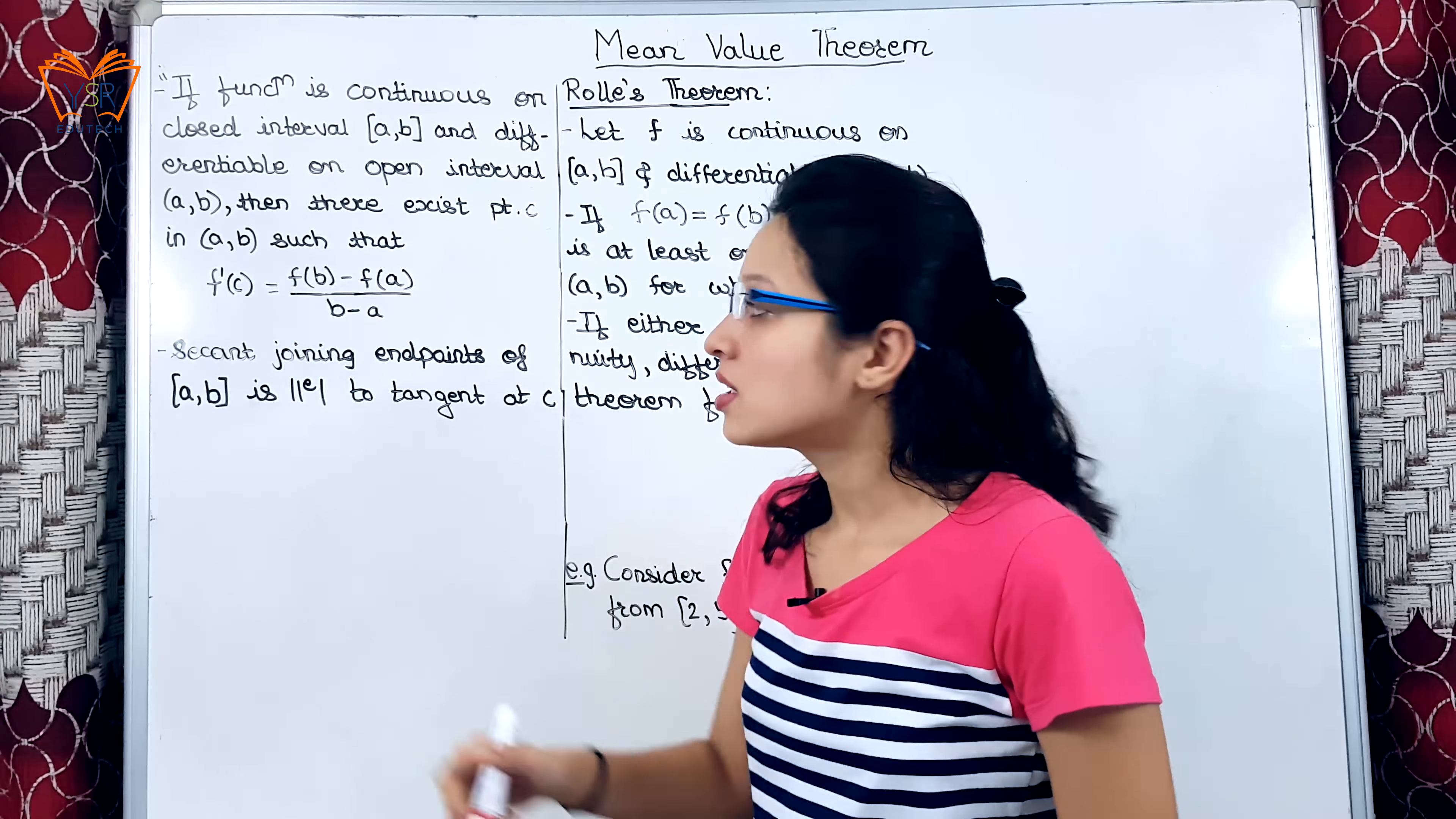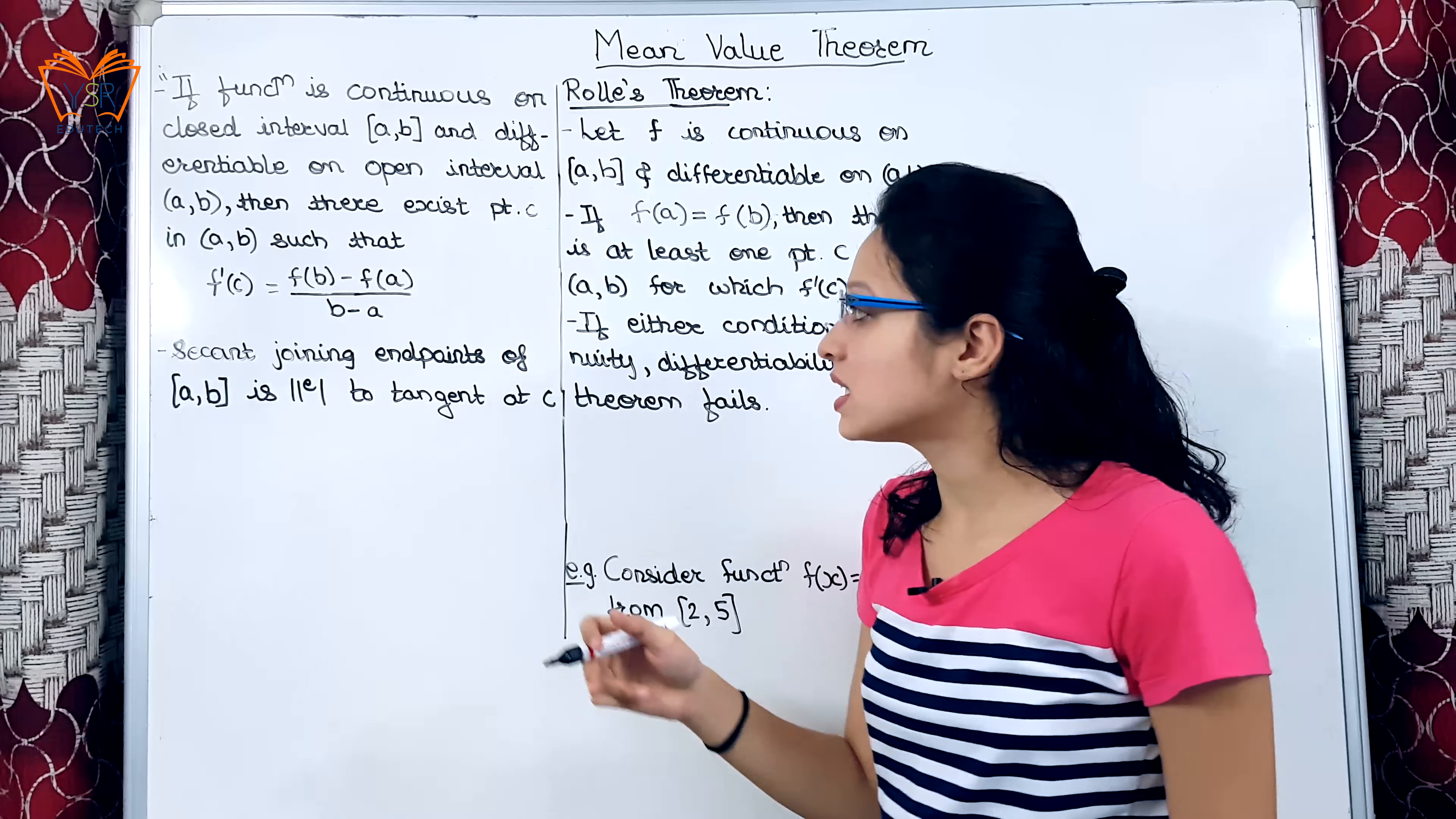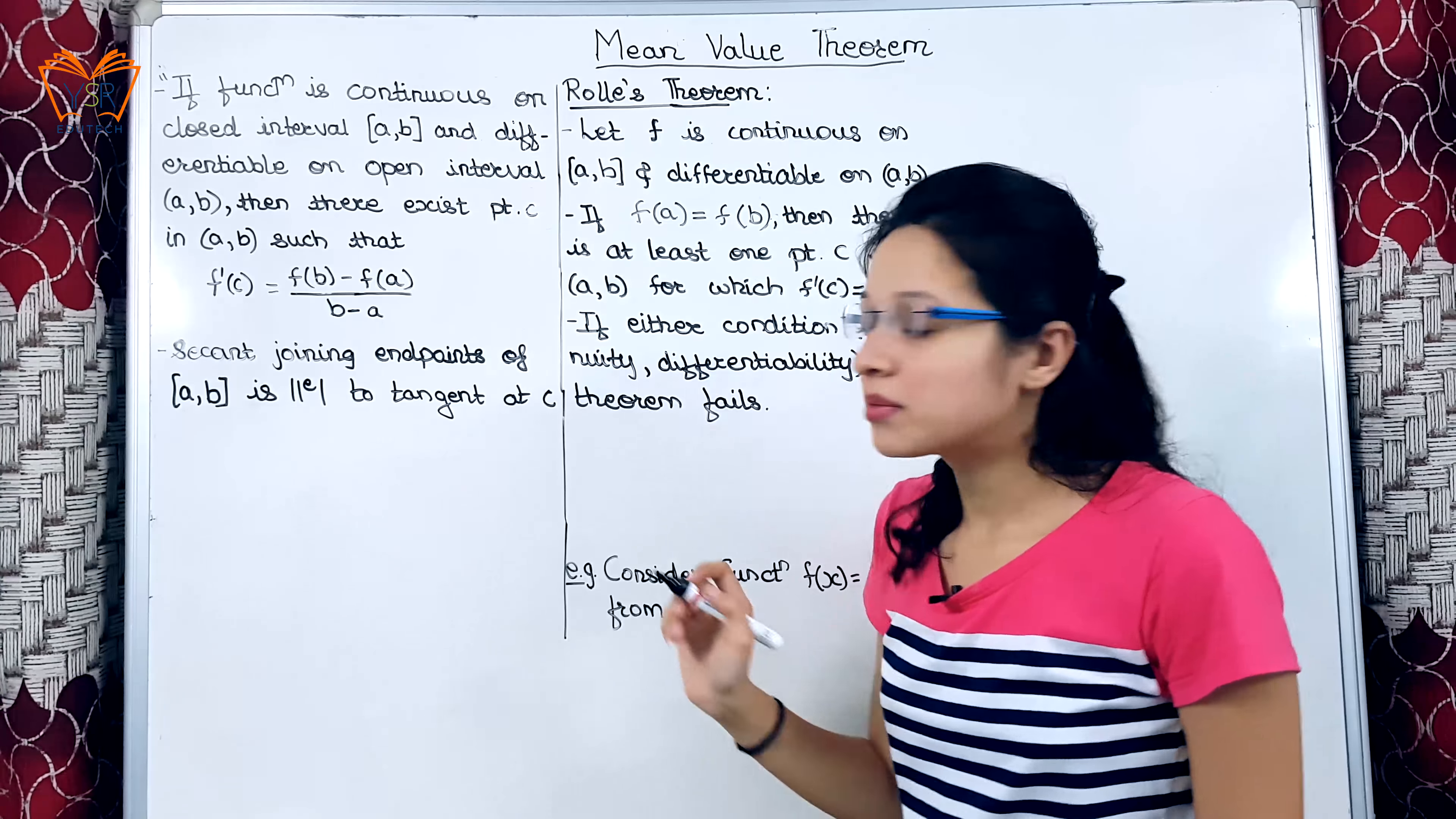Statement of mean value theorem is, if function is continuous on closed interval [a,b] and differentiable on open interval (a,b), then there exists a point c in the open interval (a,b) such that f'(c) is equal to f(b) minus f(a) divided by b minus a.